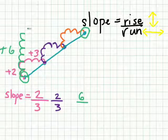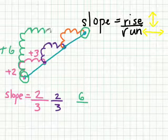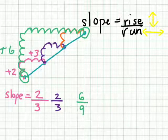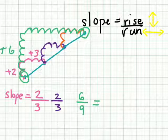The run: one, two, three, four, five, six, seven, eight, nine. Let's simplify this. Let's put this into lowest terms.